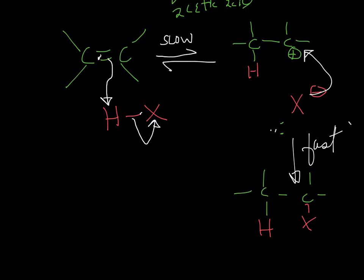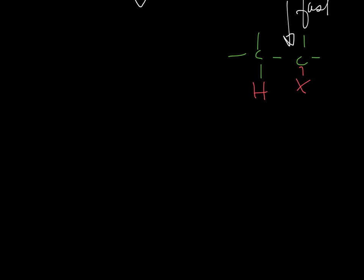Make sure you can work out that mechanism — it's relatively simple. The last point is called regioselectivity. We've kind of already discussed this: it's about whether one outcome is more favorable than another. In the first example we assumed the two carbons were identical, but what if one has two carbons hanging off it and the other has two hydrogens? It's asymmetrical. One way will be better than the other, and that's due to regioselectivity — specifically Markovnikov's rule.